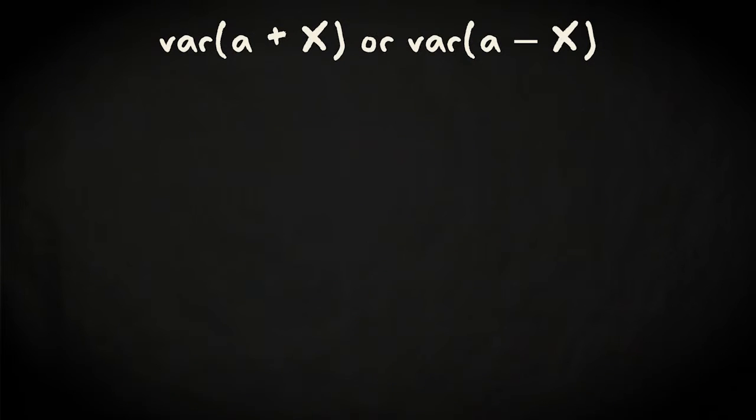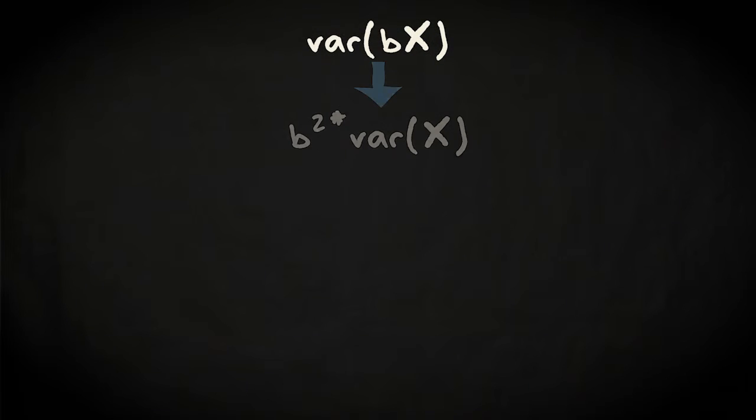Hence, by adding or subtracting a value A to a random variable, its variance doesn't change. But when you multiply it with the random variable B, its variance becomes the original variance times B squared.